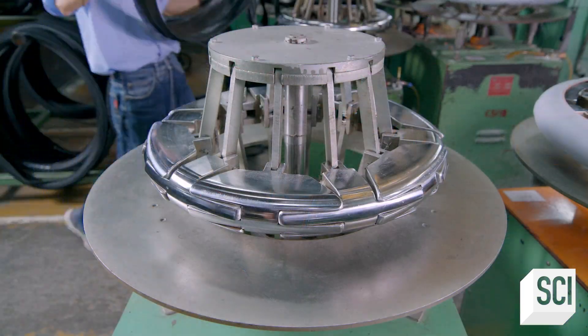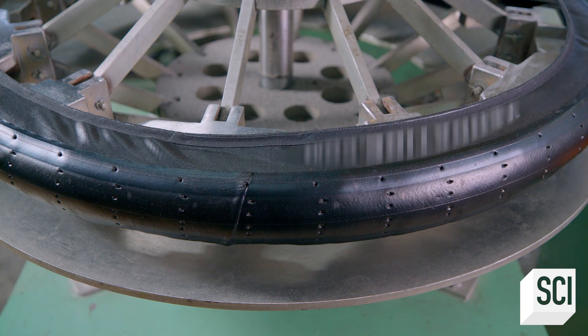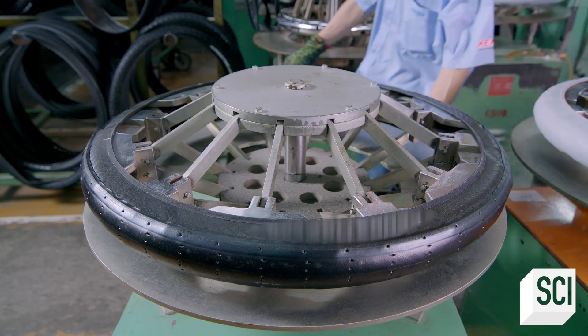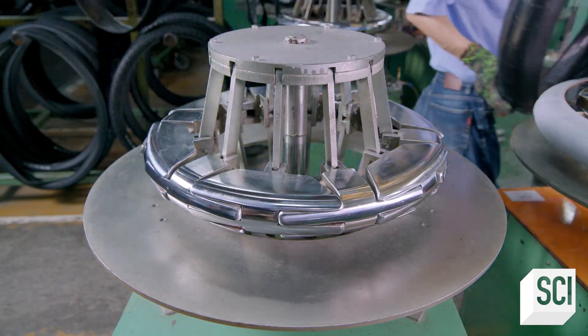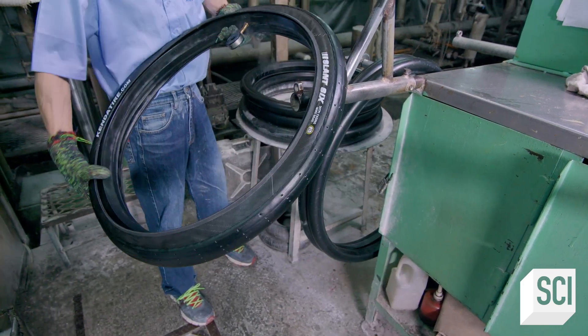Once vent holes have been cut in the rubber, it's over to an expanding mold where the tire takes shape. The technician inserts a rubber curing bladder to maintain the shape of the tire.